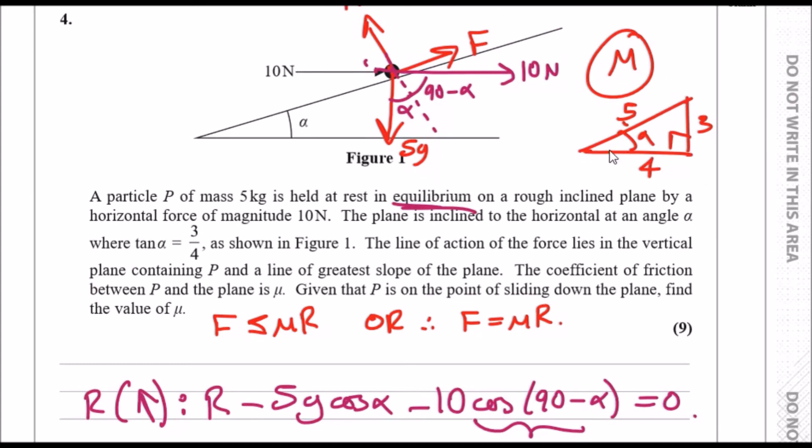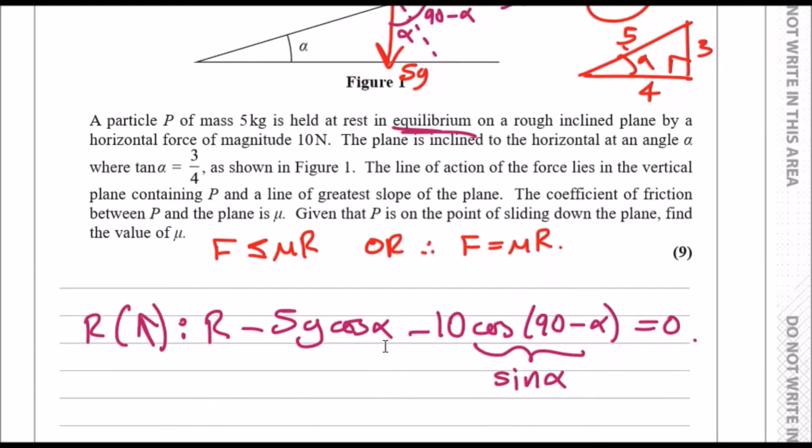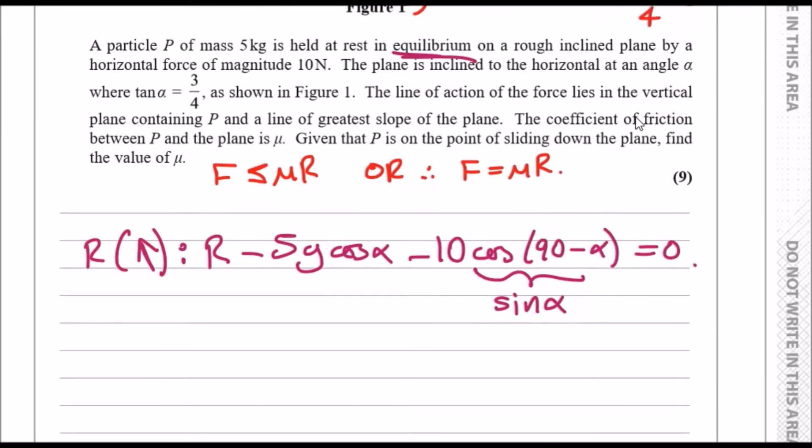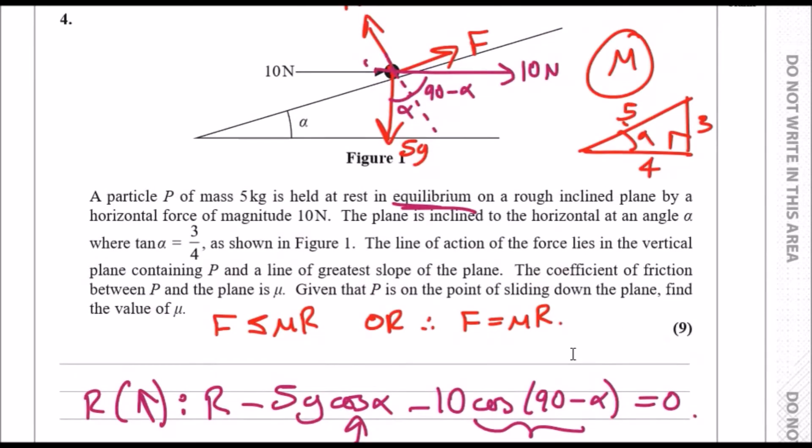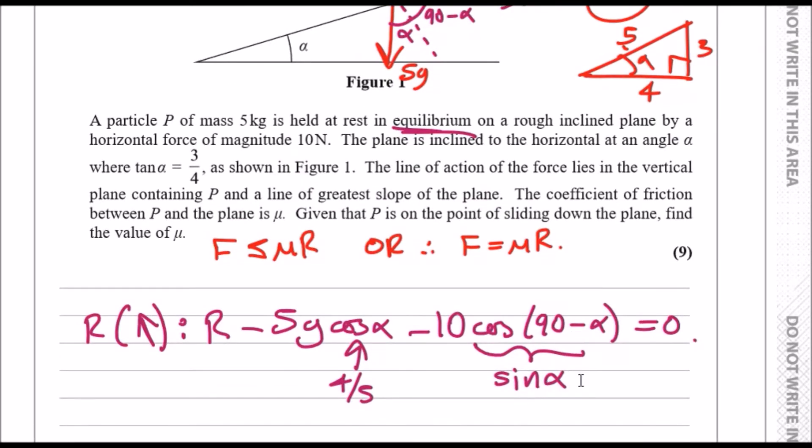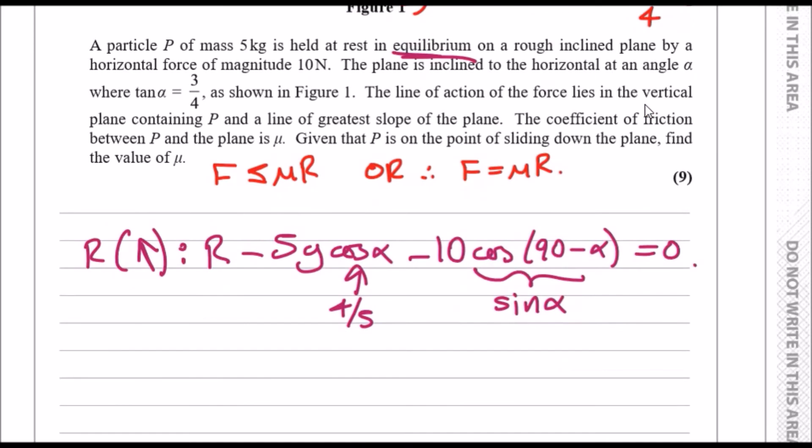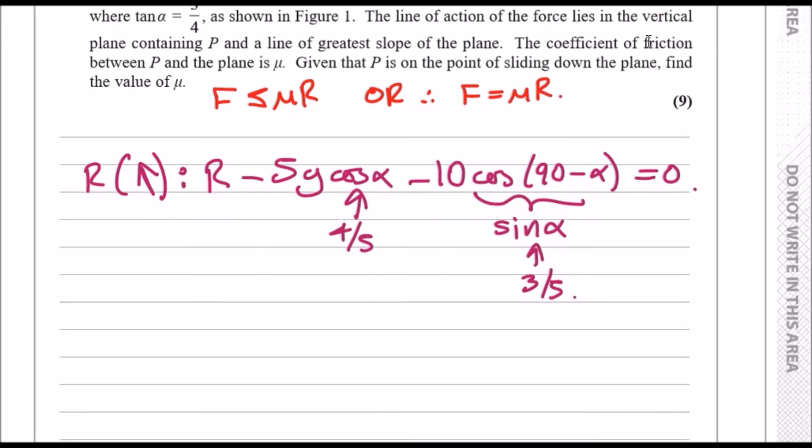We know these values, cos and sin, because we have the trigonometric right-angled triangle. Looking at cos, it's simply adjacent over hypotenuse, so the adjacent here would be 4 and hypotenuse is 5, so this value is 4/5. Sin would just be opposite over hypotenuse, so it would be 3/5.